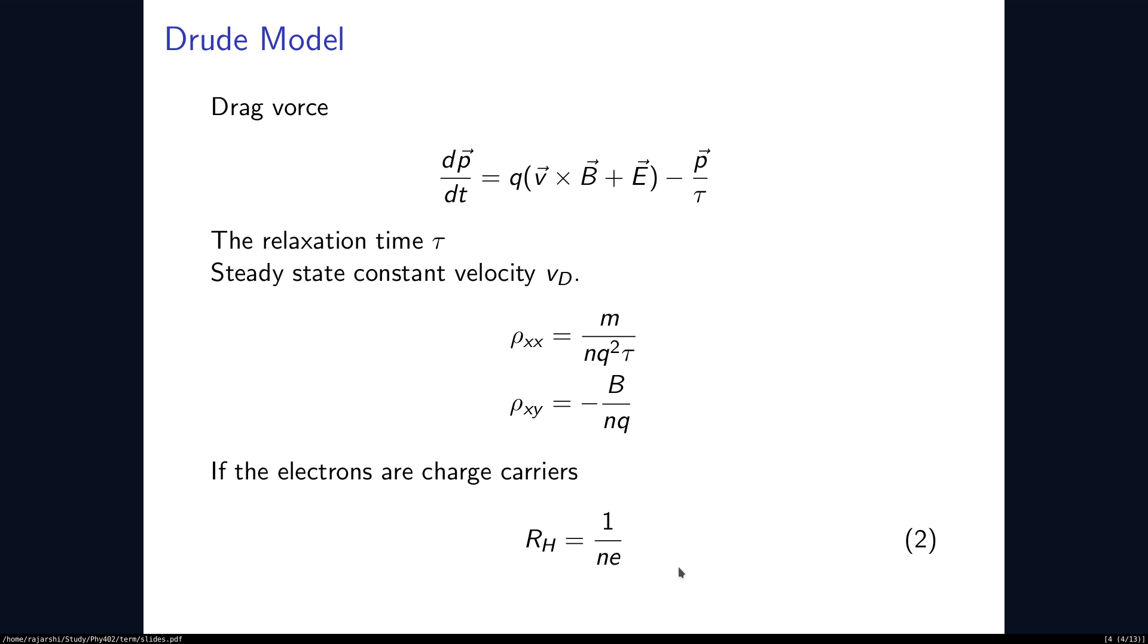Now that we understand the setup, let us understand what the Drude model has to say about this. In the Drude model, we talk about the momentum averaged over a particular time. When we assume the steady state for this equation from the Drude model, we obtain values of rho xx and rho xy and indeed rho xy is seen to be proportional to B as we expected.